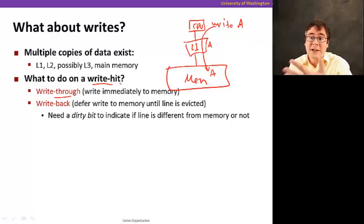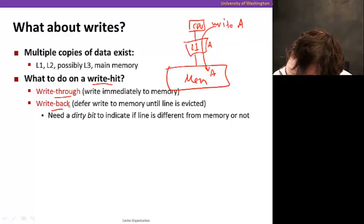The bad thing about that is that every time the CPU writes to something, it has to always go to memory, even if it's in the cache. Because it's in the cache, you do both. You immediately write it to memory updating the cache.